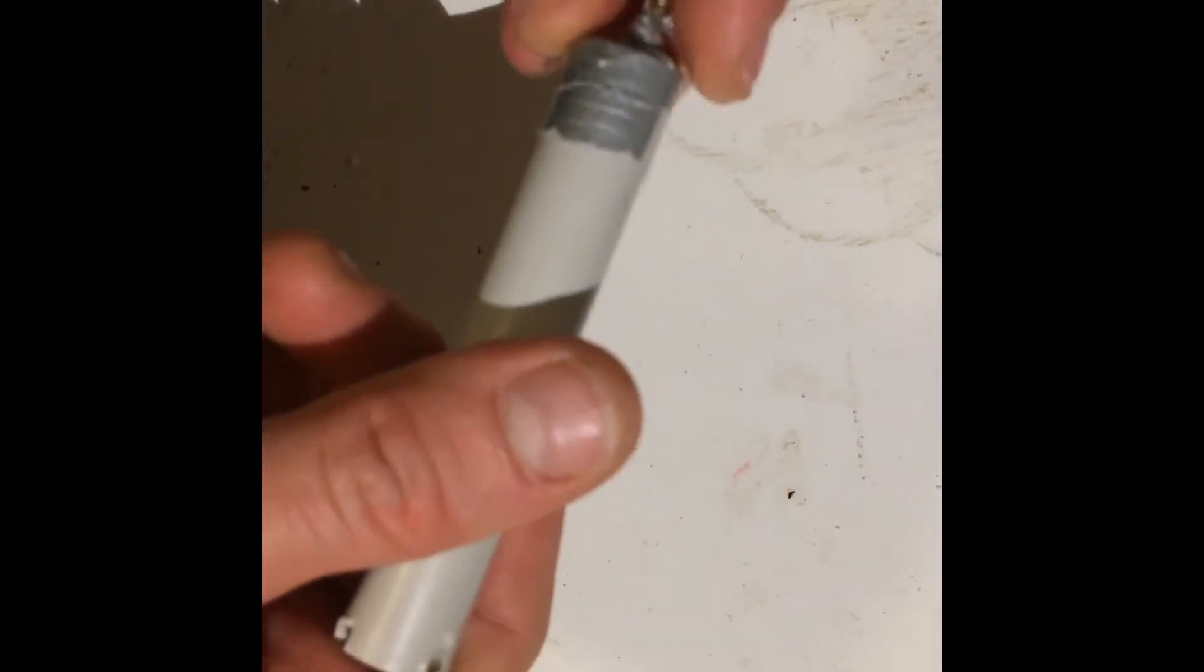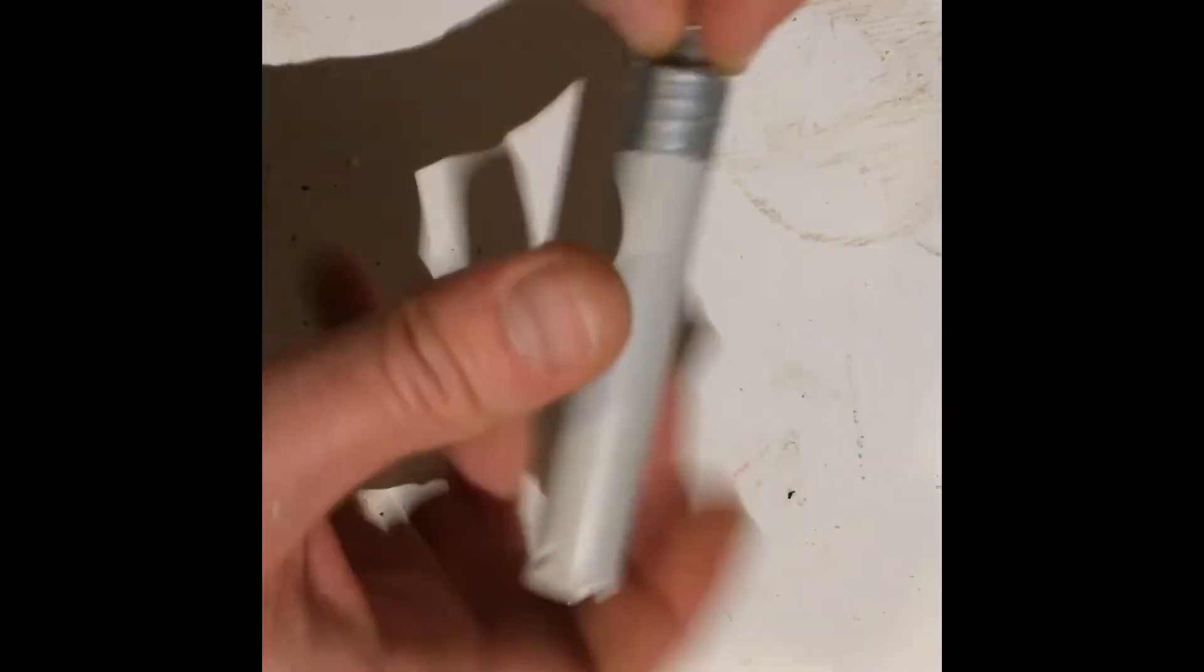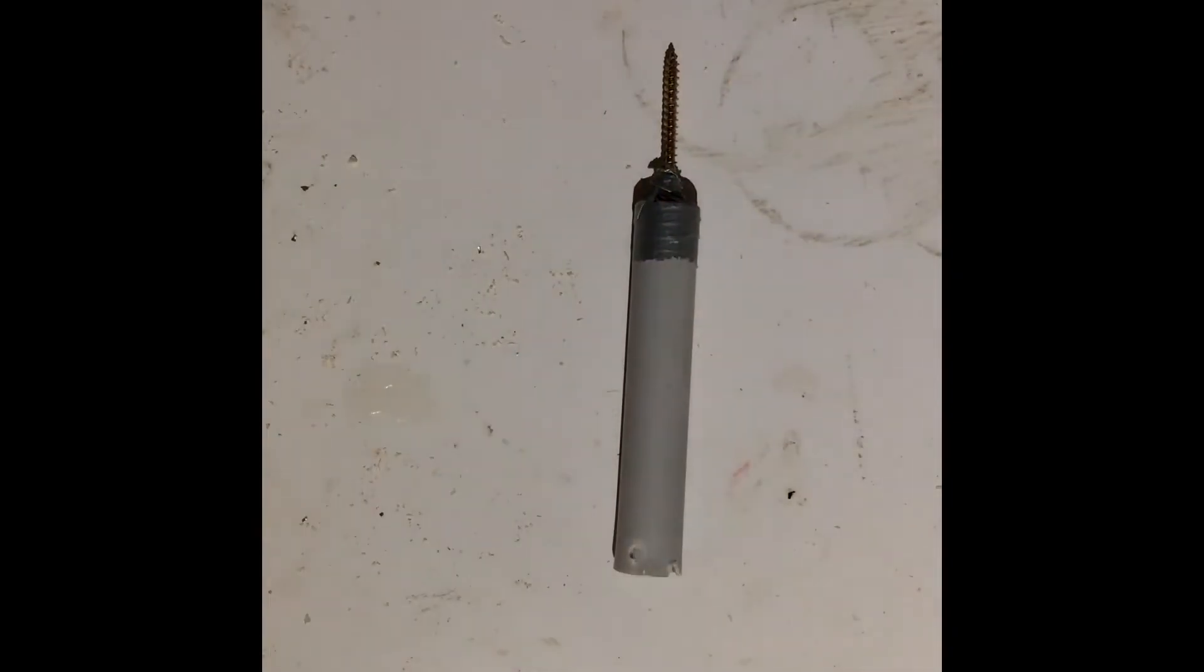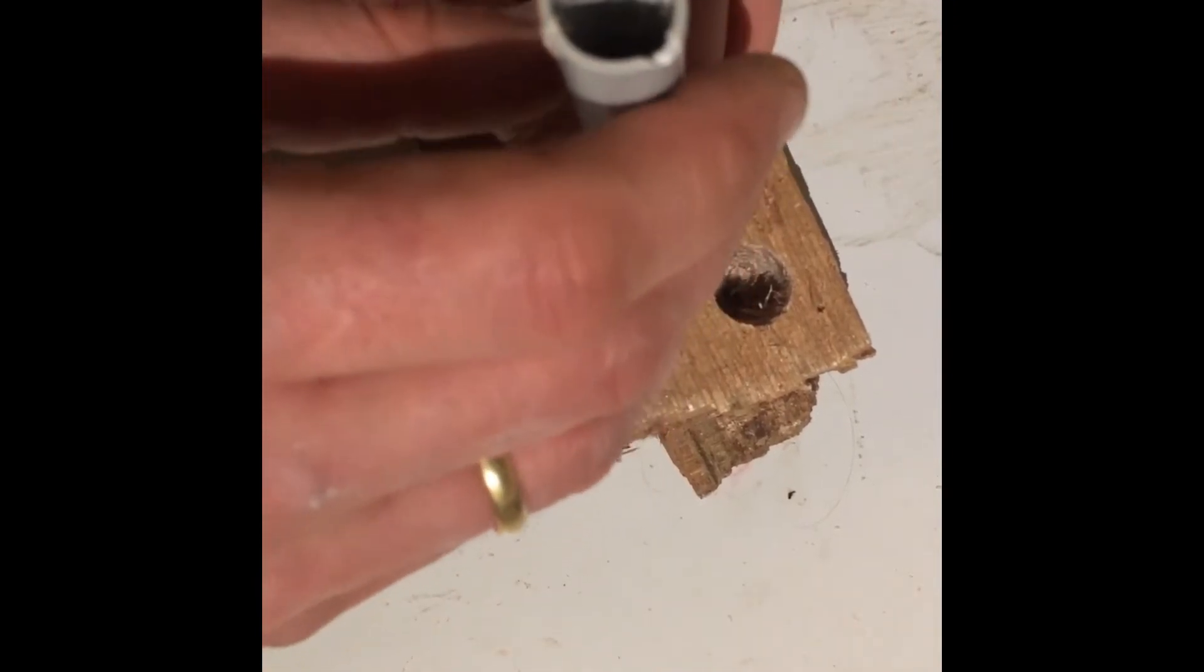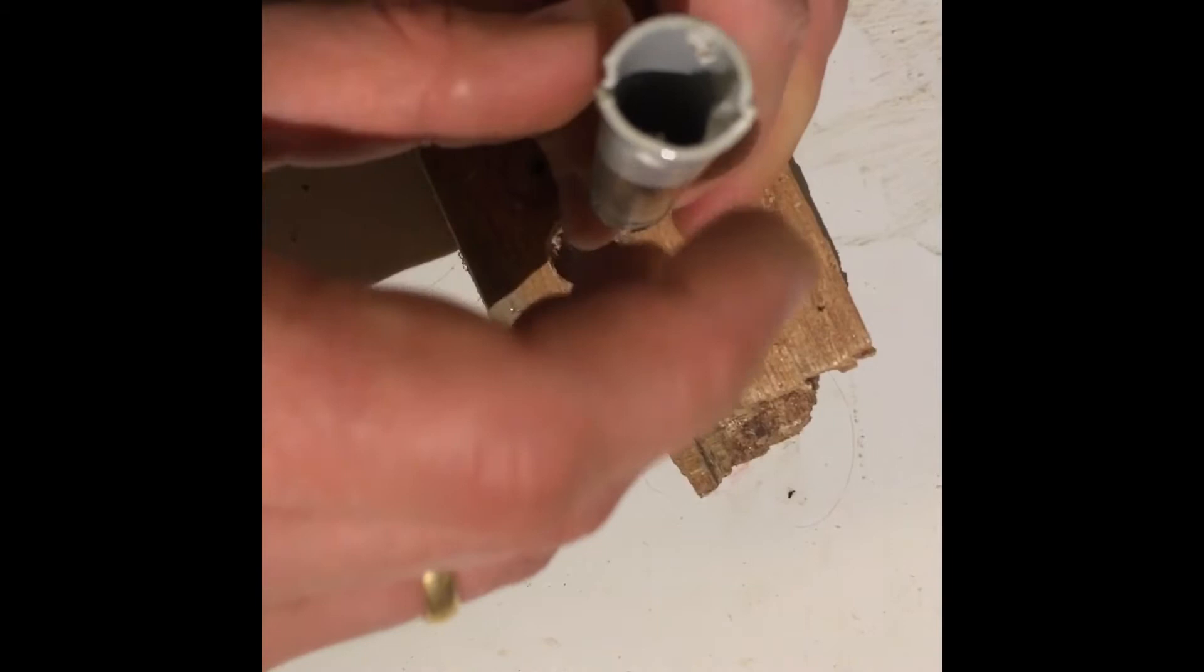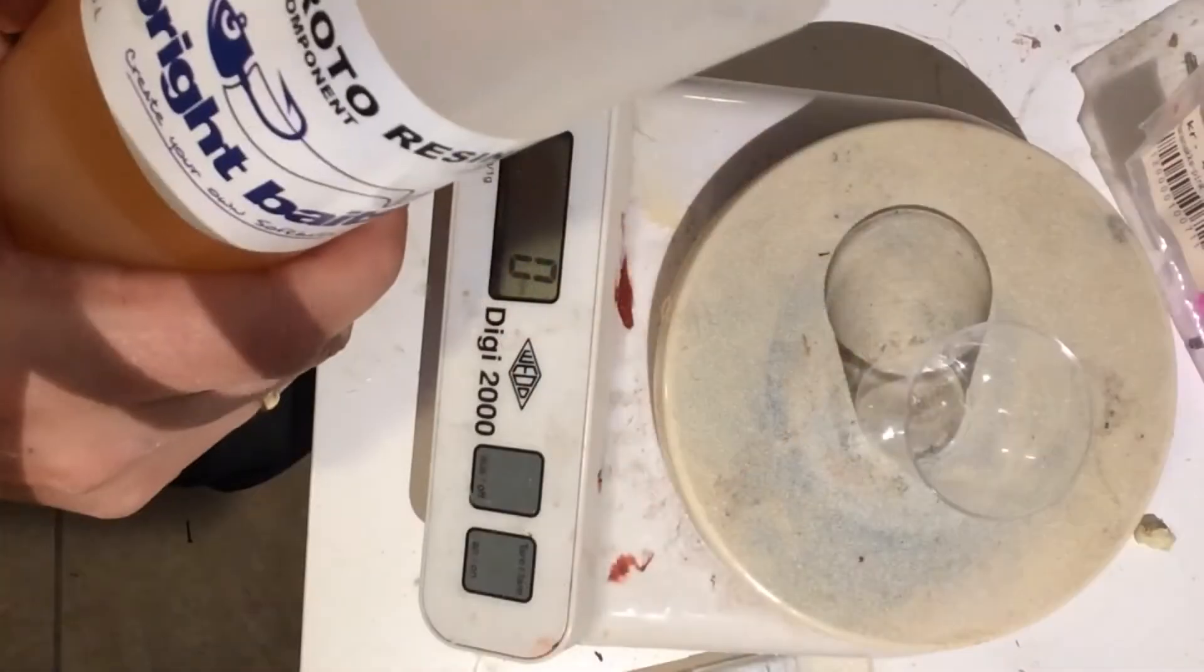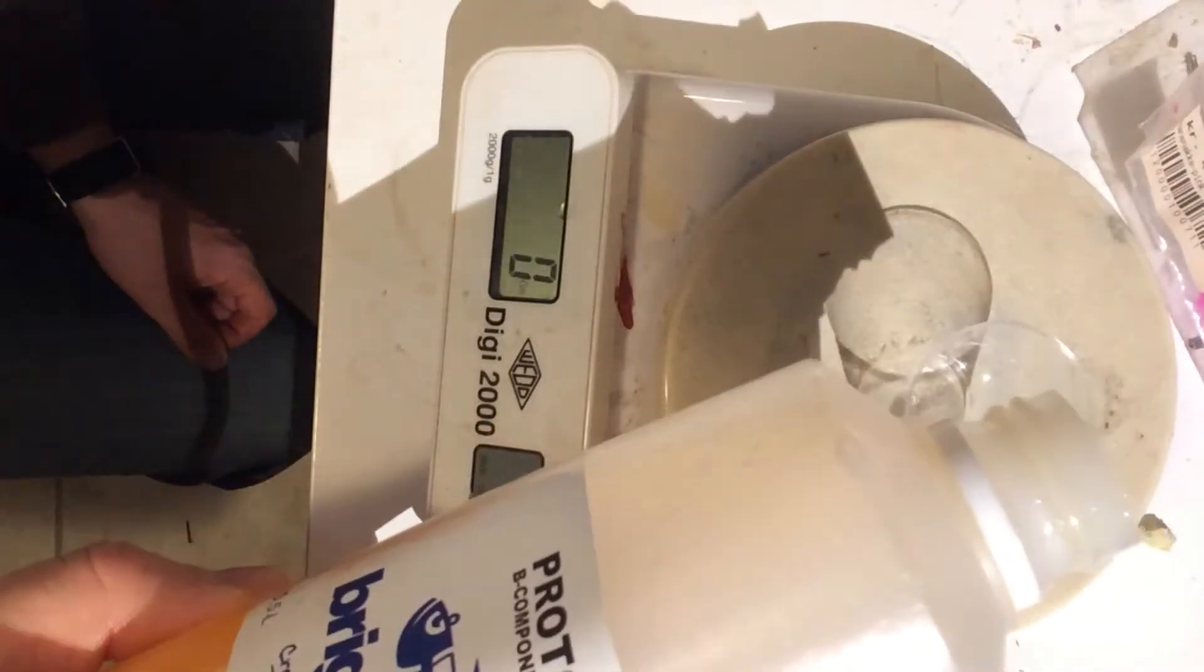I will glue it together with some resin. The resin is quite thin and will spill if it has the possibility, so you need to be sure that it can't run out anywhere. Afterwards I place it in a small piece of wood and start mixing my resin.